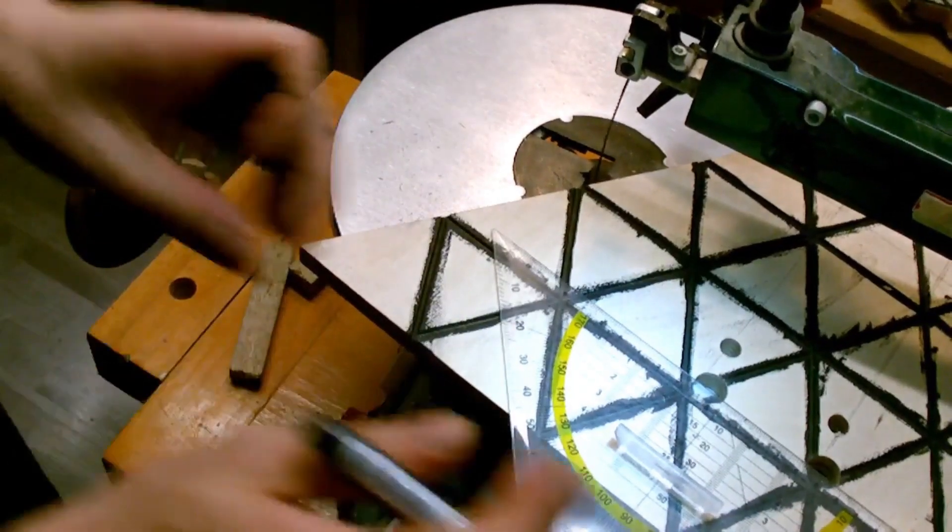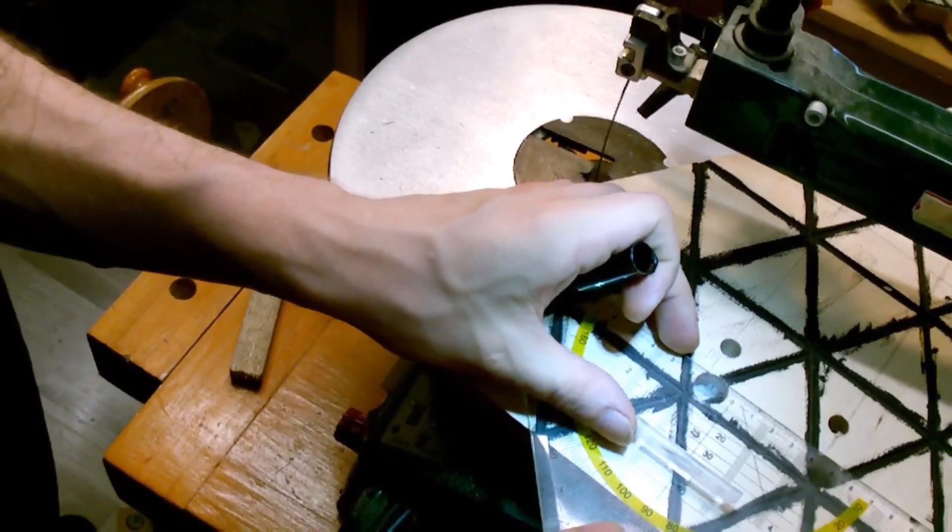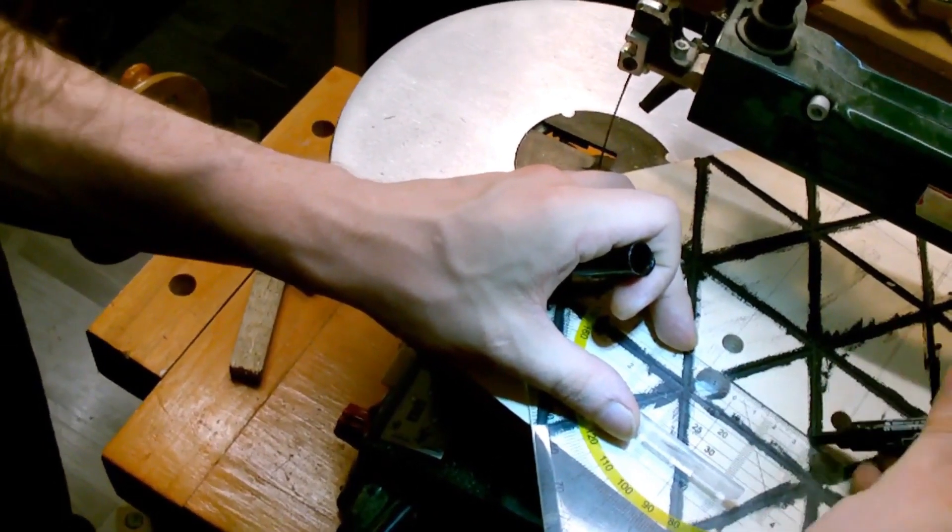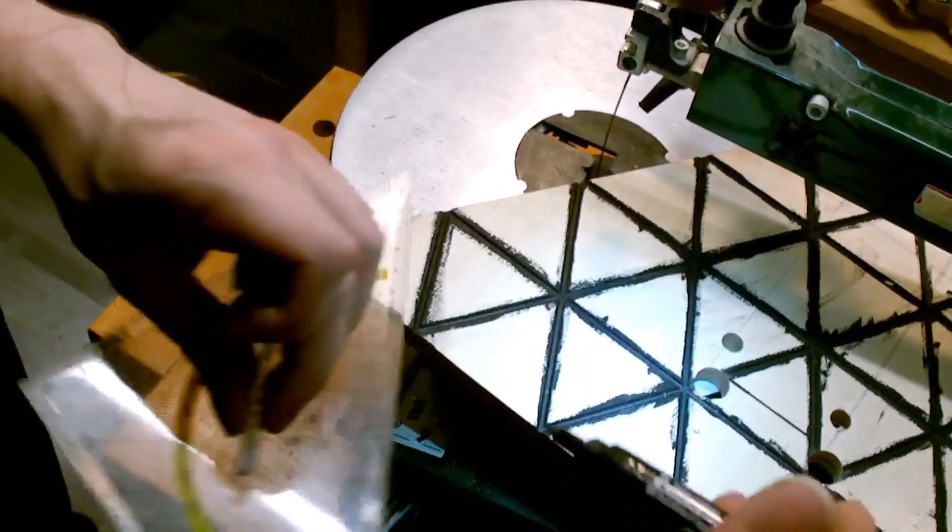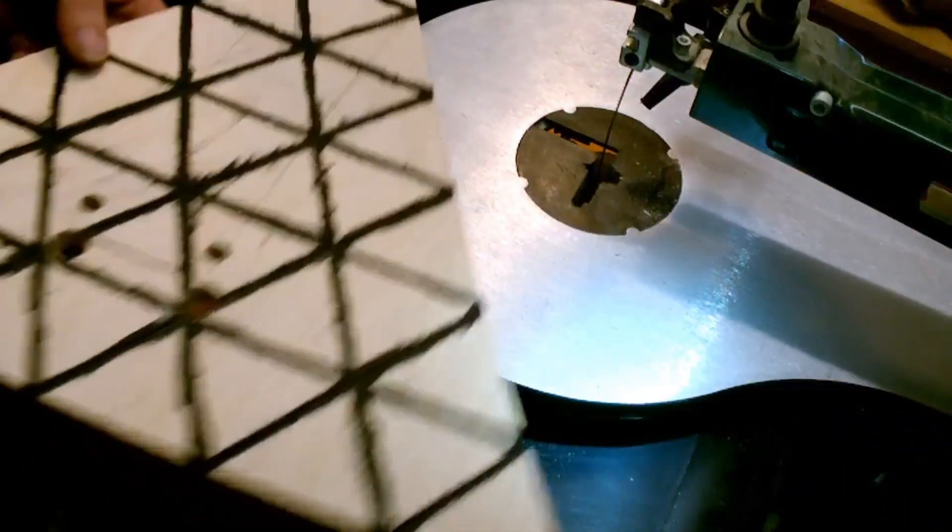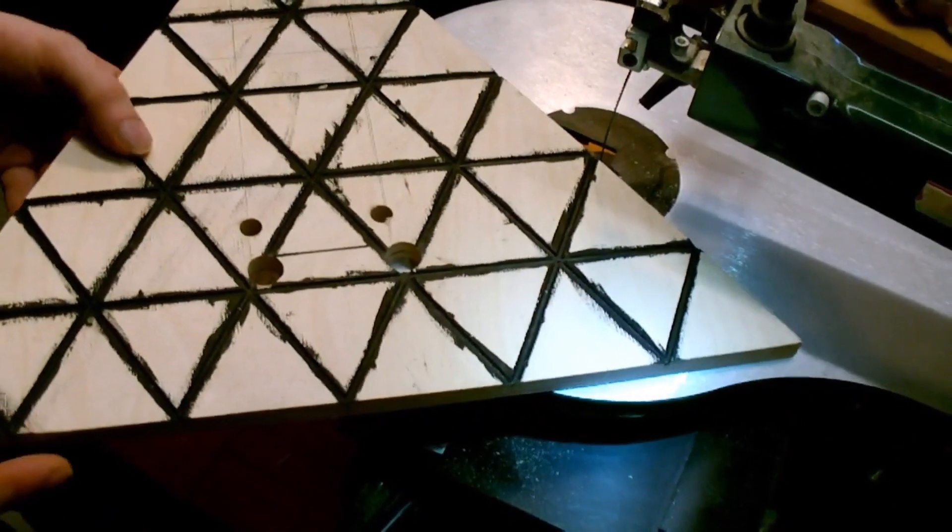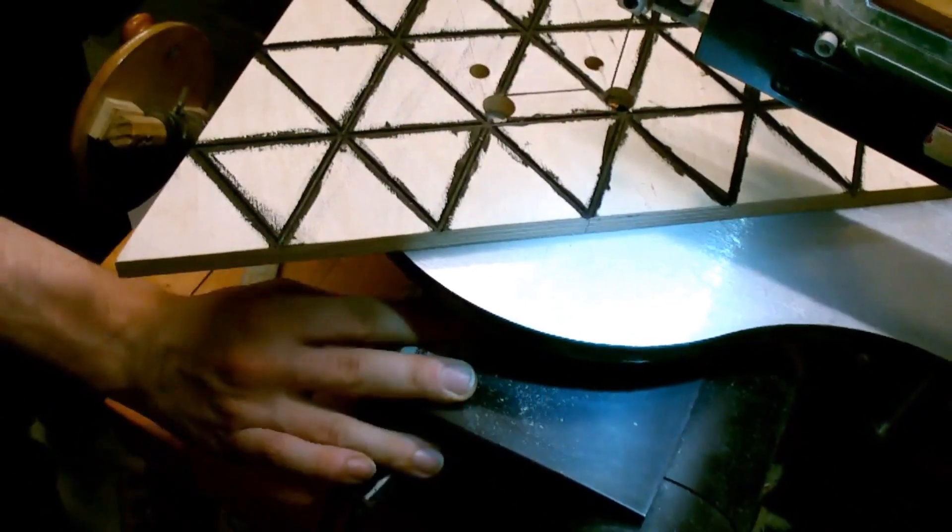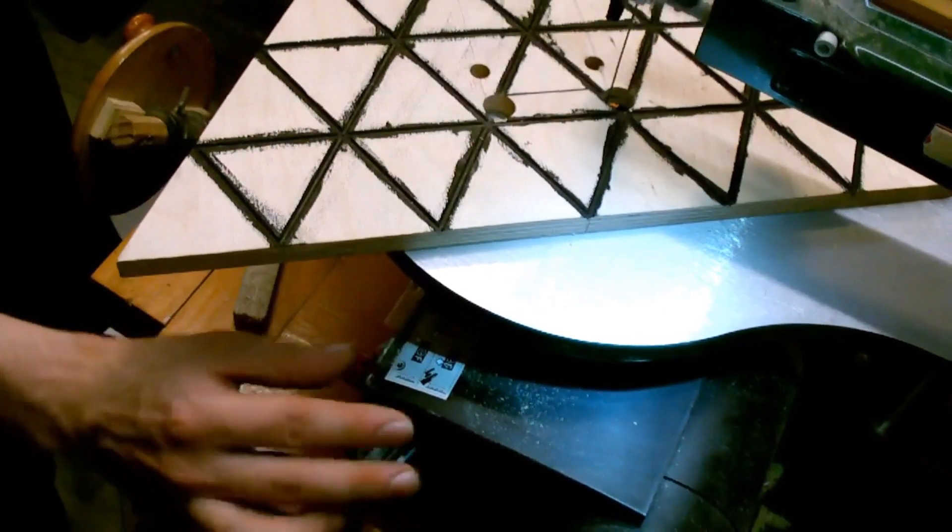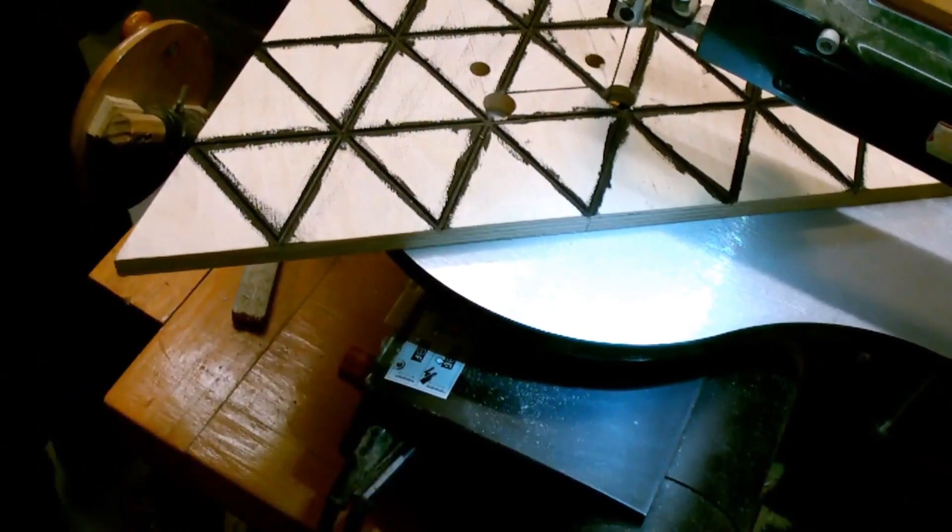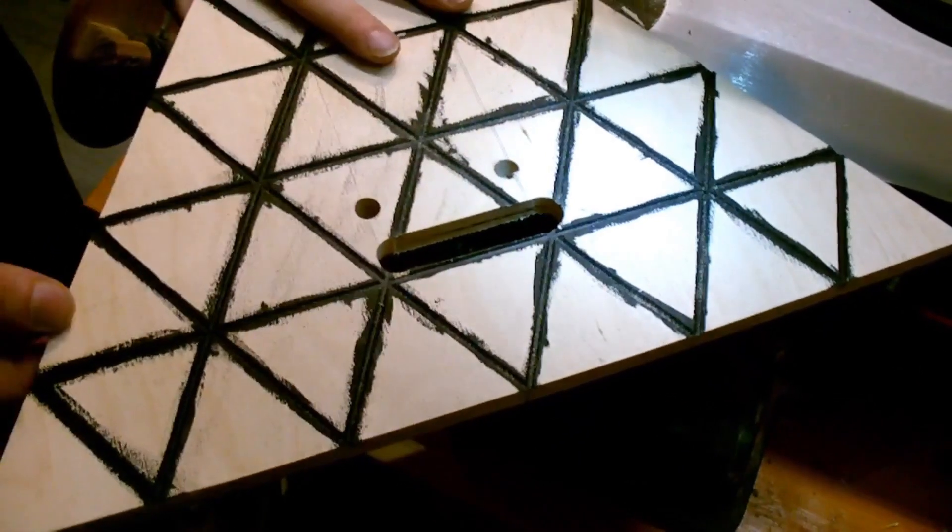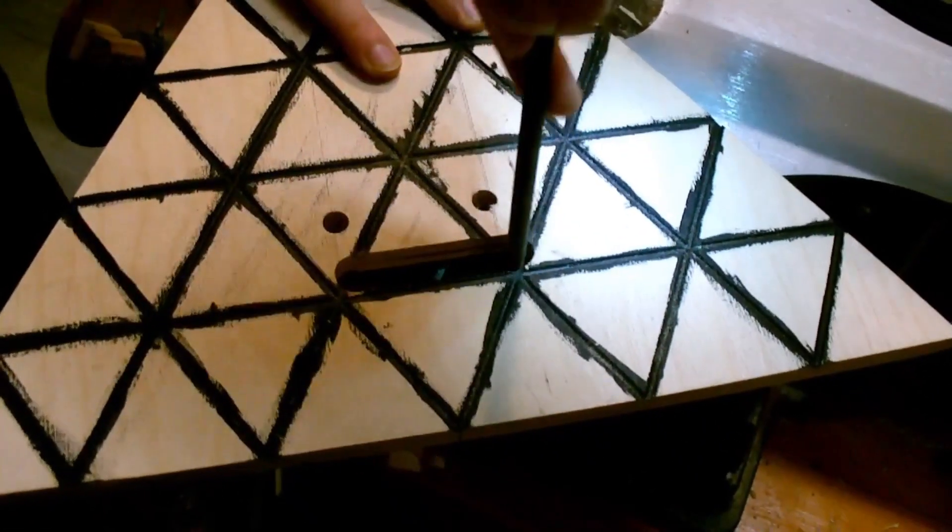I took the piece to the scroll saw. I marked the cut and pushed the wood into the moving saw blade. After the wood has disappeared, it was time to remove the bells and fit the hardware.